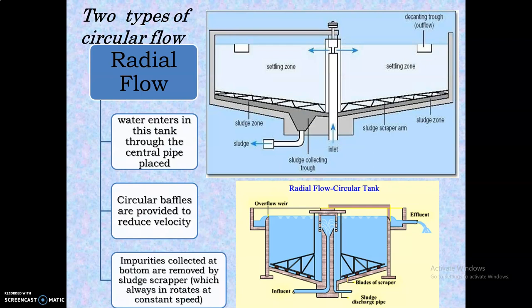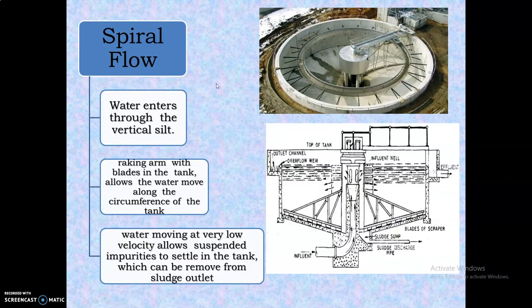In the circular tank there are two types of flows: one is radial flow and another is spiral flow. In radial flow, water enters through pipes and impurities are collected at the bottom and removed by sludge scrapers. In radial flow, water enters through a central inlet and is passed on both sides.